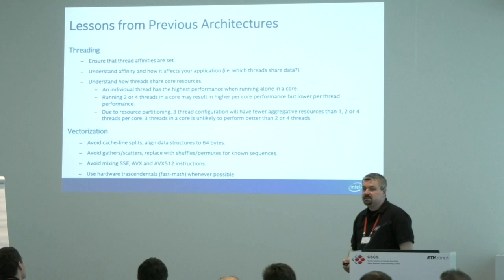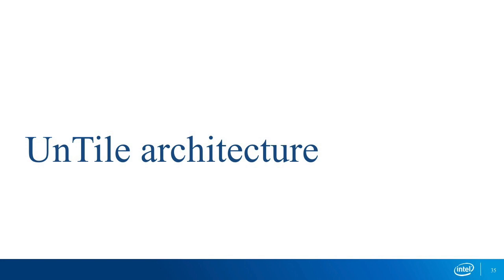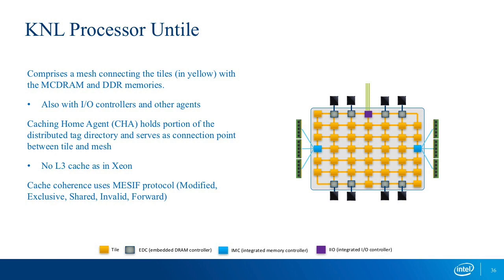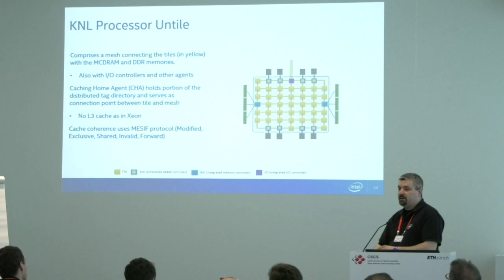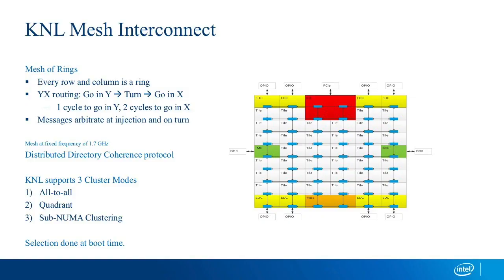Now the untile: 2D mesh, memory controllers, interconnect to the rest of the system. There is no L3 cache — no global cache to optimize data exchange between individual cores. It's a distributed L2 cache, and a tile can only load into its local L2 cache. This is completely different from Xeon, where an L3 cache slice can be accessed by everybody.